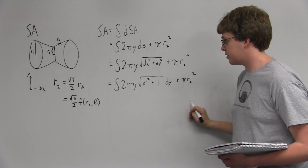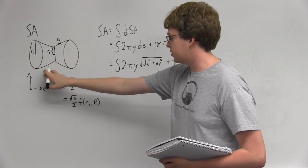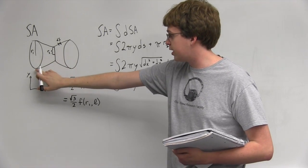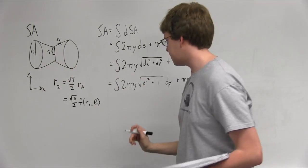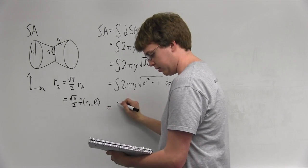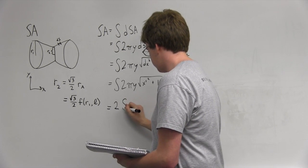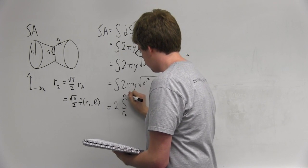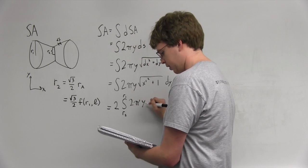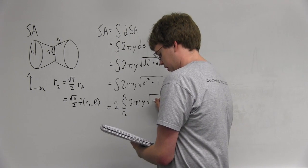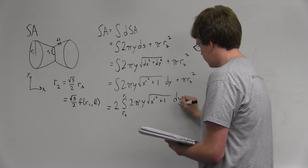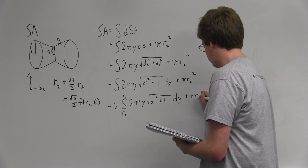Now, since this is a symmetrical system, we want to add bounds to this. What we want to do is, instead of integrating over the entire thing to get the surface area, we just want to integrate from one side to the middle, multiply it by 2. So, our final equation for the surface area becomes 2 times the integral from R2 to R1 of 2πy times the square root of x prime squared plus 1 times dy plus πR2 squared.